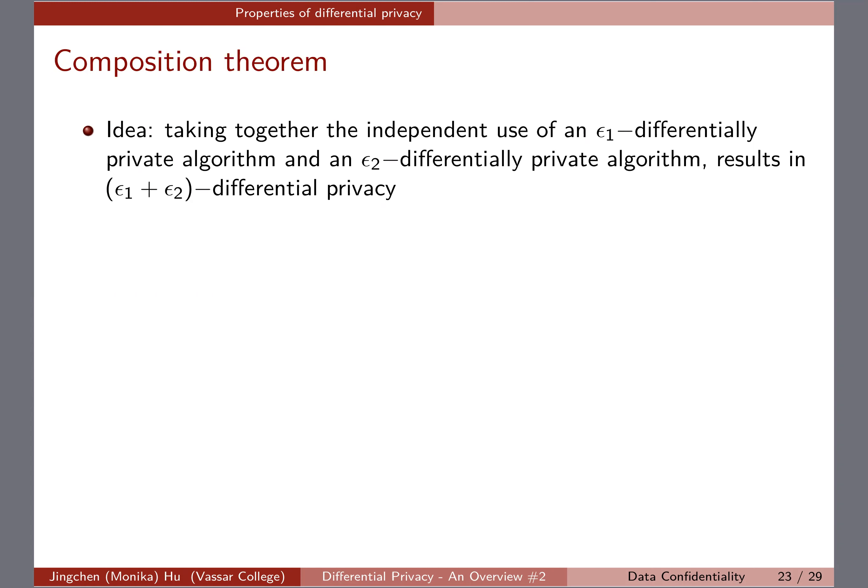One very useful composition theorem about differential privacy is that if you are working with an ε₁ differentially private algorithm and another ε₂ differentially private algorithm, doing them sequentially — or even at the same time — will result in another differentially private algorithm. But the privacy budget spent in the two steps will have to be added up together.